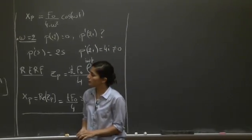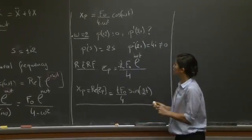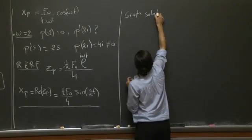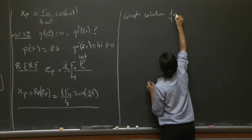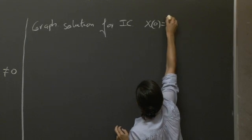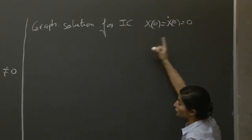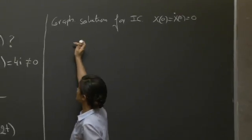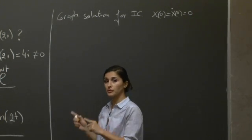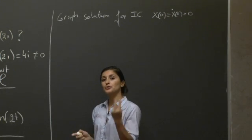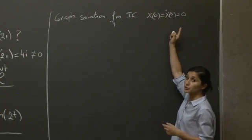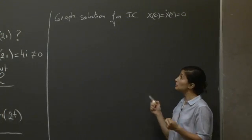OK. So the last part of the problem was to sketch the solution for the initial conditions x of 0 equals x dot of 0 equals 0, so the rest initial conditions. So here are two ways to proceed. The long way would be to seek the solution to the homogeneous equation without the right hand side, the forcing cosine, introduce two constants of integration, and then seek these constants of integration on the general solution, and you would find that these two constants of integration would be 0 with these initial conditions.